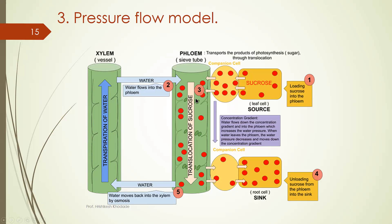So when food material enters into the sieve tube element water will enter because it creates osmotic gradient and food material is transported from companion cell to the sink.